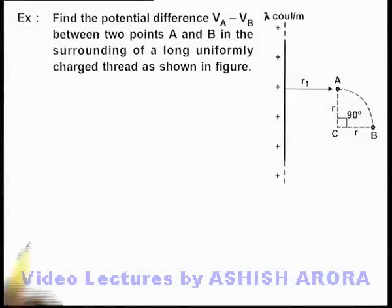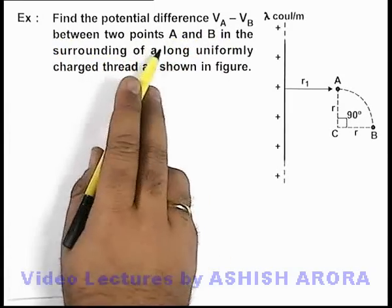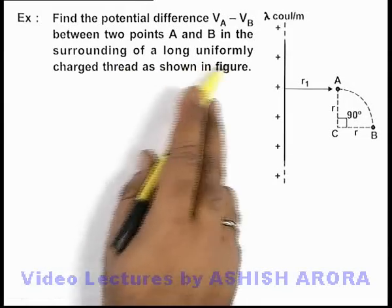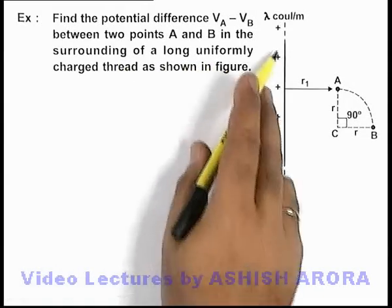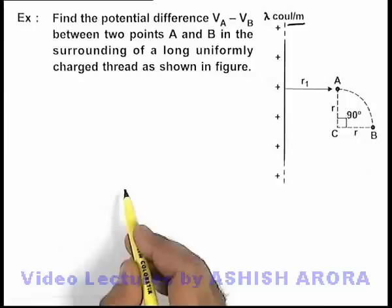In this example we are required to find the potential difference V_A minus V_B between two points A and B in the surrounding of a long uniformly charged thread, as shown in the figure, with uniform linear charge density λ coulomb per meter.